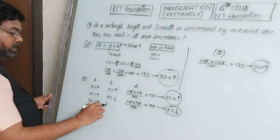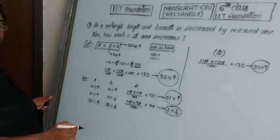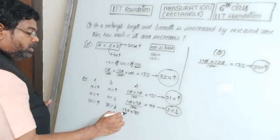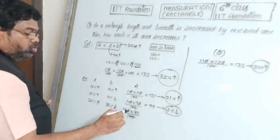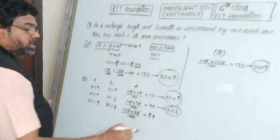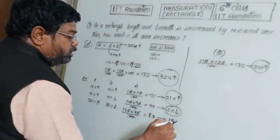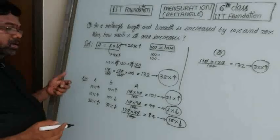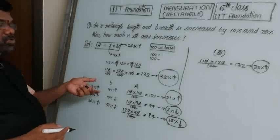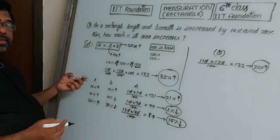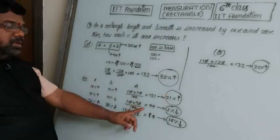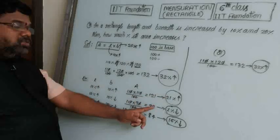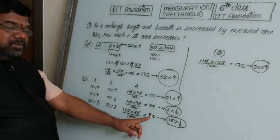If length increases by 20% and breadth decreases by 30%, take 120 into 70 divided by 100. Zeros cancel giving 12 into 7 equals 84. Less than 100 by 16, so area decreases by 16%. If the resultant value is greater than 100, the difference is the percentage increase; if less than 100, the difference is the percentage decrease.